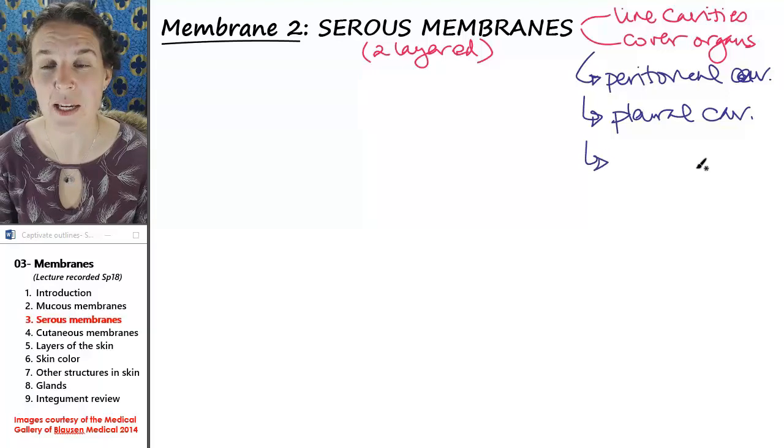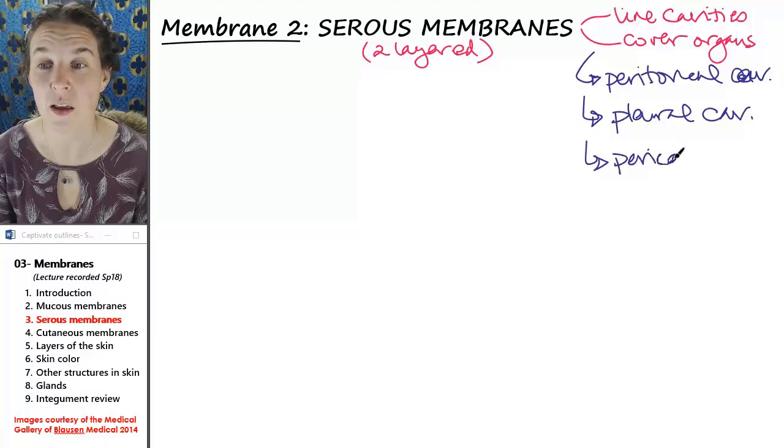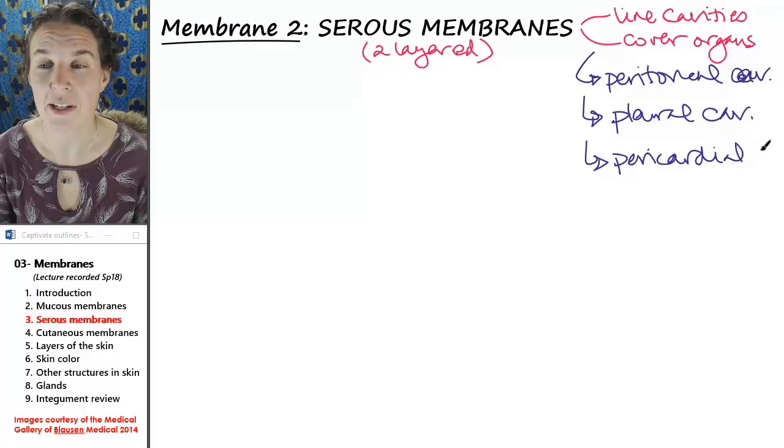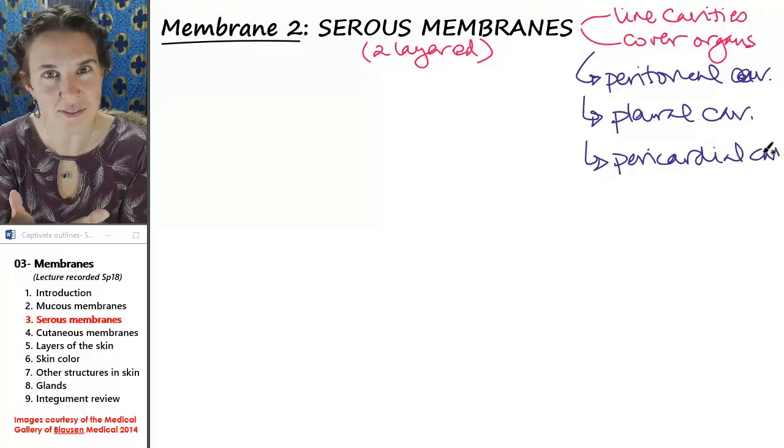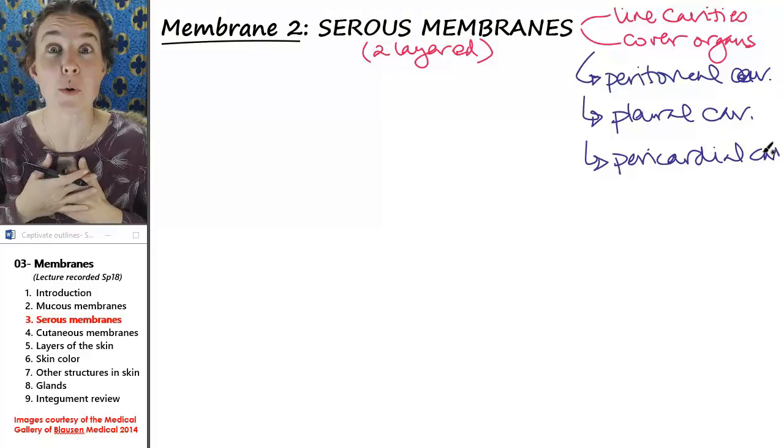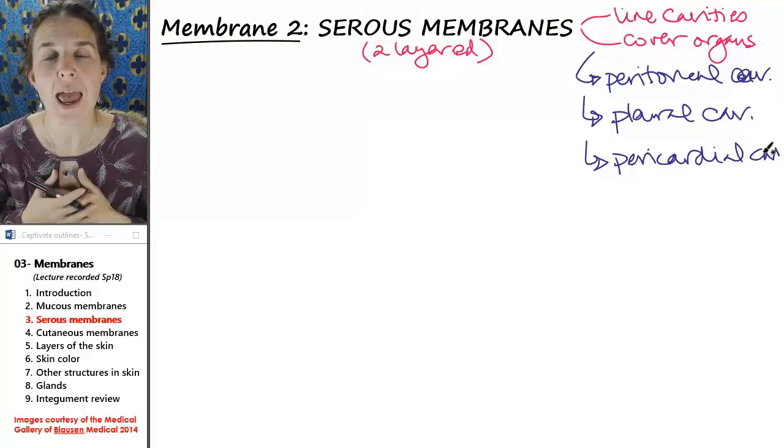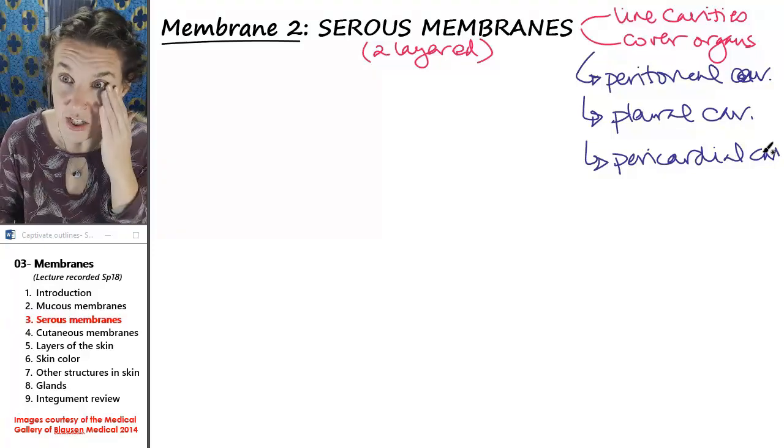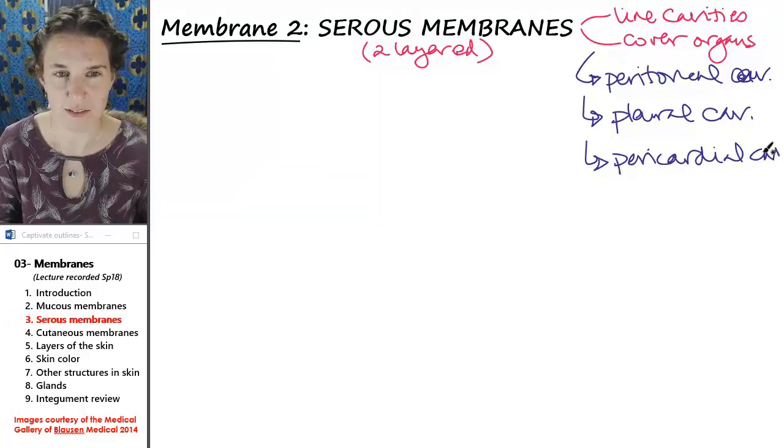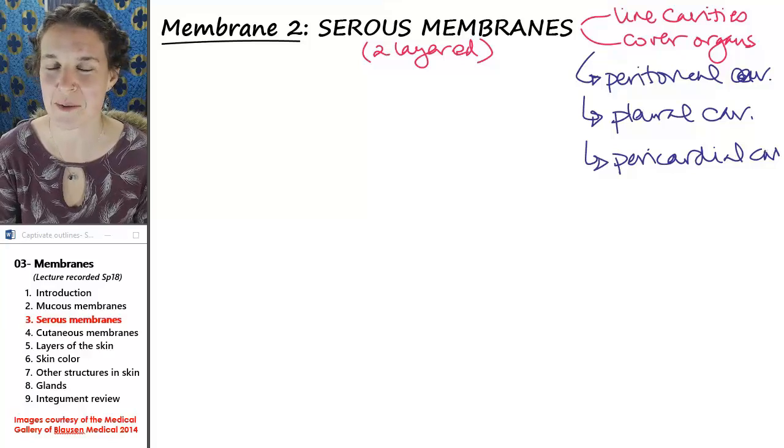The third place we're going to see it is the pericardial cavity. They line the pericardial cavity in the thoracic cavity within the mediastinum and cover the heart.